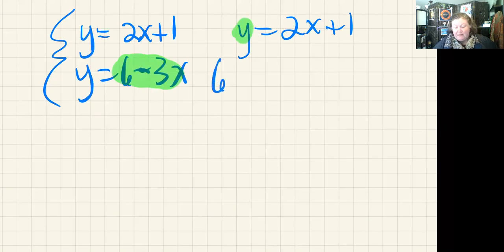So I end up with 6 - 3x = 2x + 1. If you think about that, we're also saying this y is equal to the other amount as well.